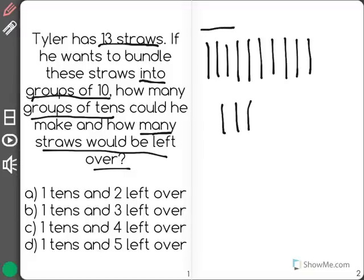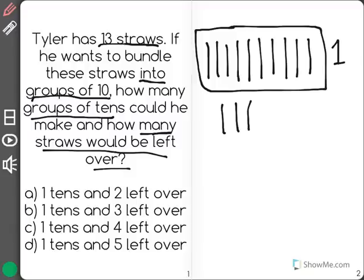Now the reason I kept these 10 up here together is because that is one group of 10. So as you can see, Tyler has one full group of 10 and he still has 1, 2, 3 left over. So your correct answer would be B, 1 tens and 3 left over.